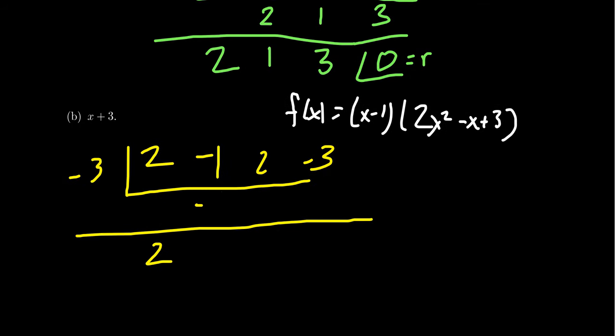2 times negative 3 is negative 6. Minus 1 is negative 7. Times negative 3 is going to give us positive 21. Plus 2 is 23. And then you take 23 times negative 3. That's going to give you negative 69. Minus 3 gives you negative 72. This is not a factor because this remainder turns out not to be 0.